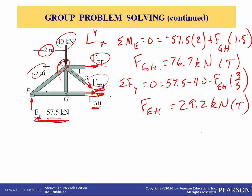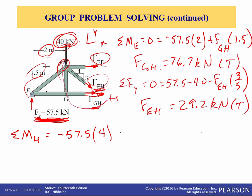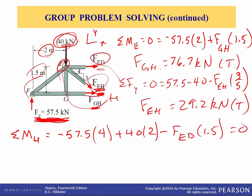Lastly, I'm going to sum moments about point H, because that eliminates the moments due to F sub EH and F sub GH. Summation of moments about H equals zero: the reaction force at A tends to rotate clockwise, so it's negative 57.5 times 4 meters away from H. The moment due to the 40 kN load is counterclockwise — positive — plus 40 times 2. The moment due to F sub ED tends to rotate clockwise — negative — minus F sub ED times 1.5 equals zero. Solving for F sub ED gives minus 100 kN — so it's in compression.